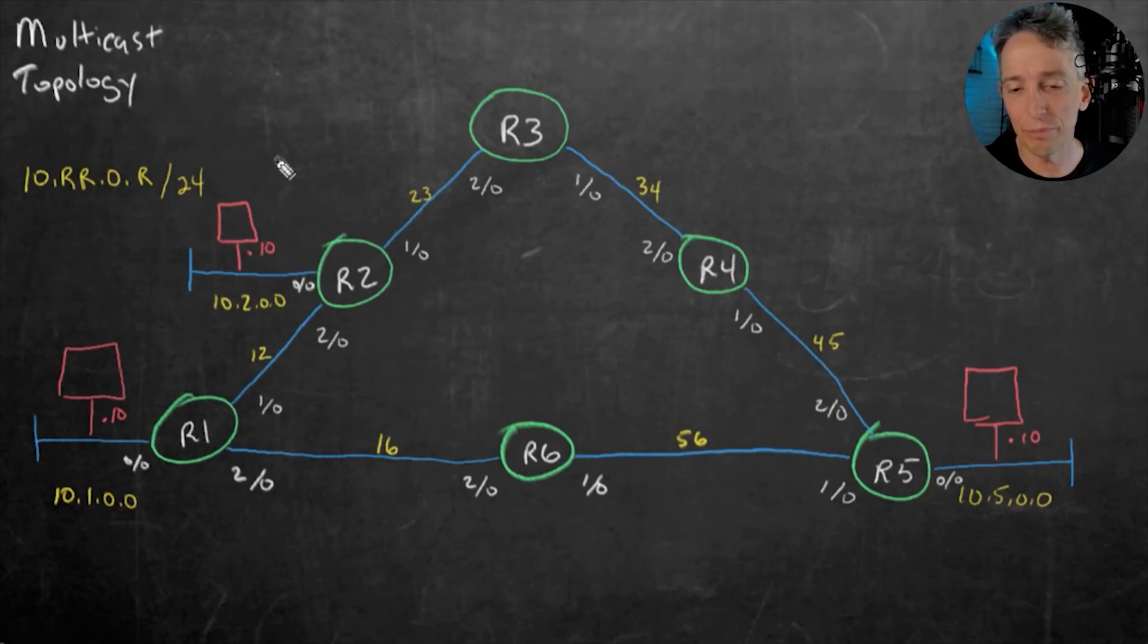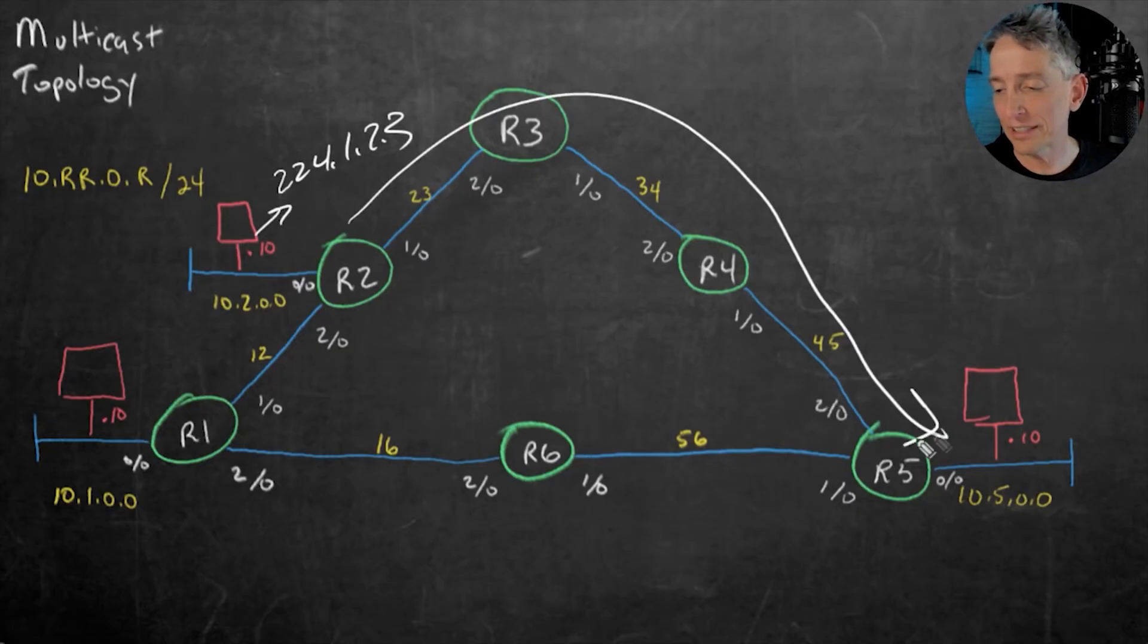Let's imagine we have this multicast group of 224.1.2.3 that's being pumped out from the server. So it's being delivered through the network down to this network segment. And then this client's happy, saying yeah, I got my multicast stream, great.